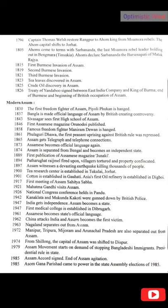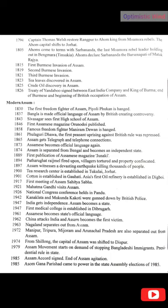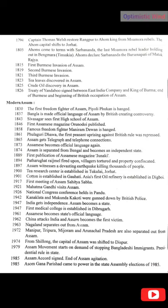Now comes the modern history of Assam, starting from 1830. In 1830, the first freedom fighter of Assam, Piyali Phukan, is hanged. In 1837, Bangla is made the official language of Assam by the British, creating controversy. In 1843, Sibsagar sees the first high school of Assam. In 1846, the first Assamese magazine or newspaper is published. In 1858, famous freedom fighter Maniram Dewan is hanged. In 1861, the Phulaguri Dhawa — the first peasant uprising against British rule — is repressed. In 1865, Assam gets telegraph and telephone connection. In 1873, Assamese becomes an official language again. In 1874, Assam is separated from Bengal and becomes an independent state.